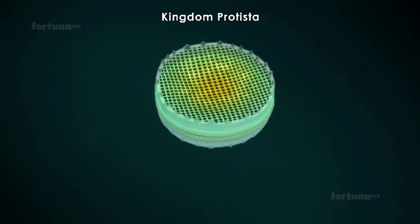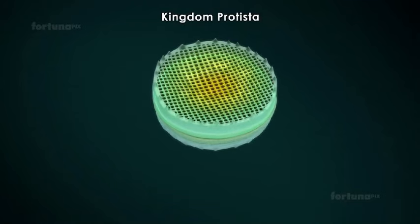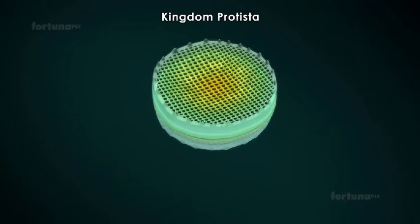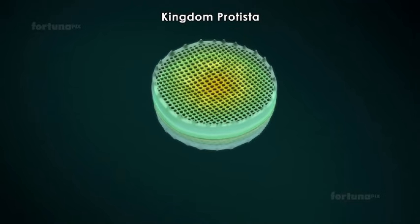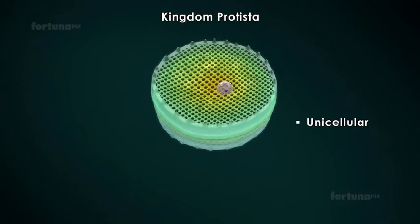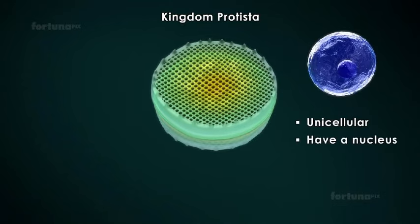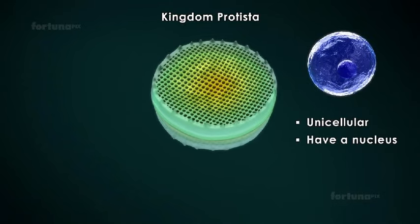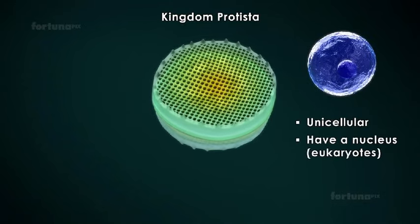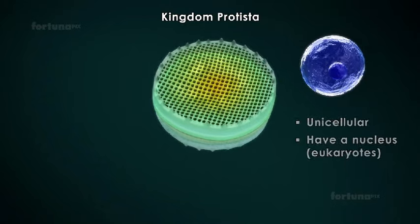Kingdom Protista is next. The organisms within this kingdom are also unicellular, but they have a nucleus. Cells of this type are referred to as eukaryotes.